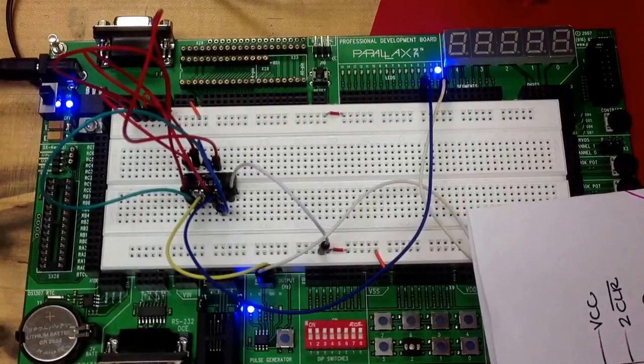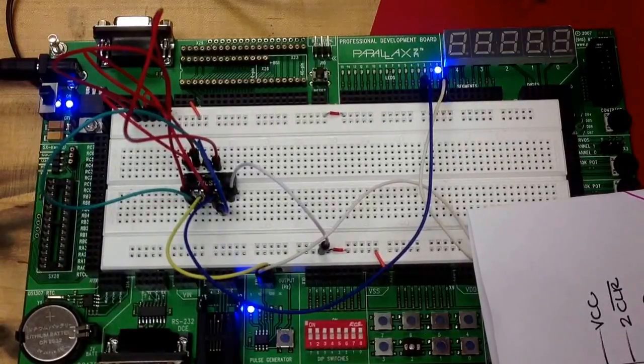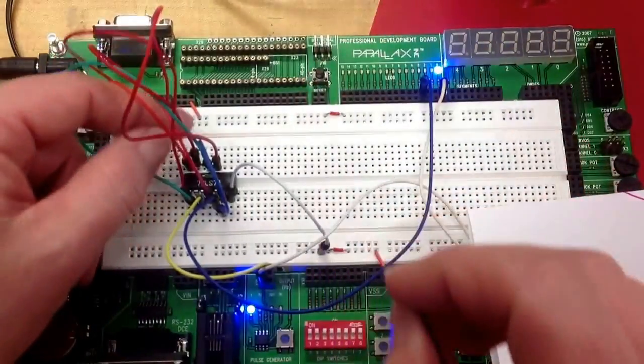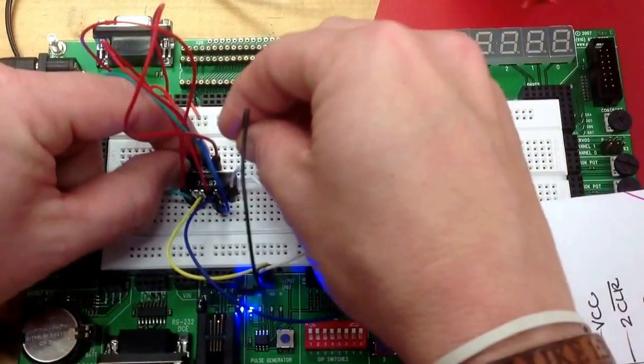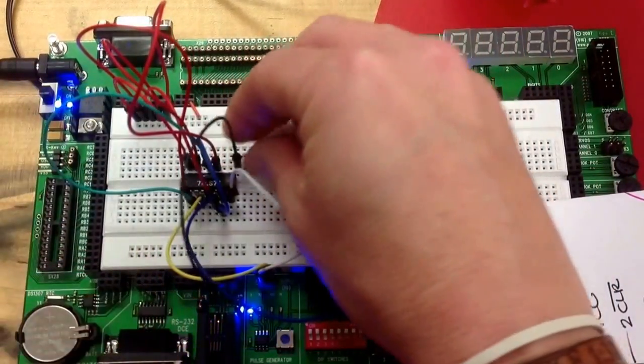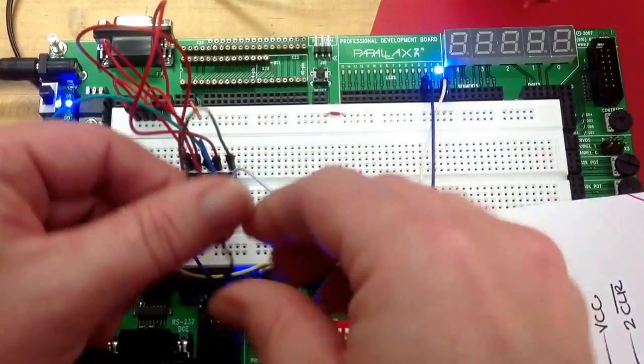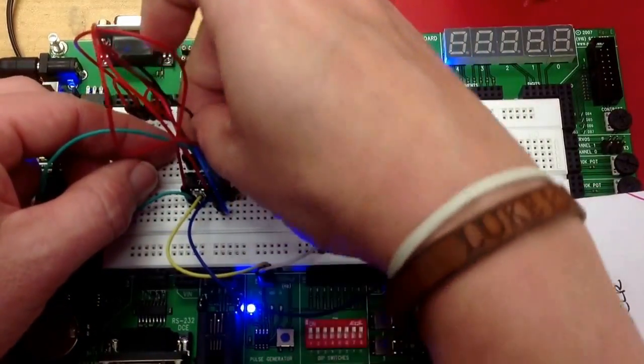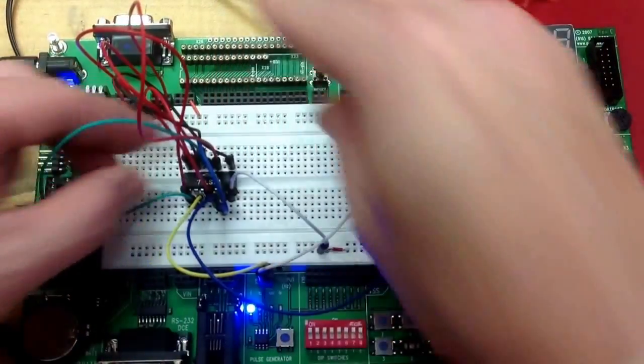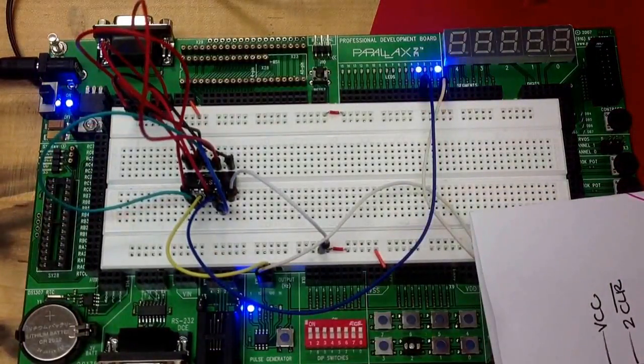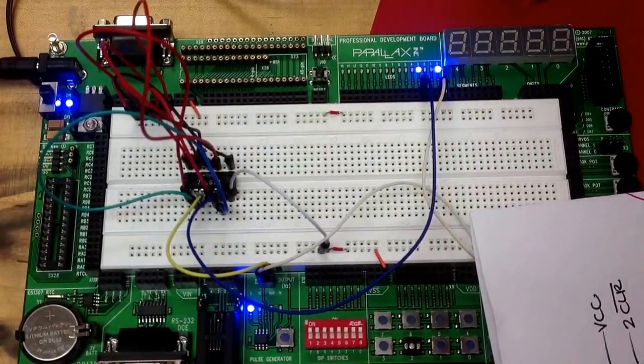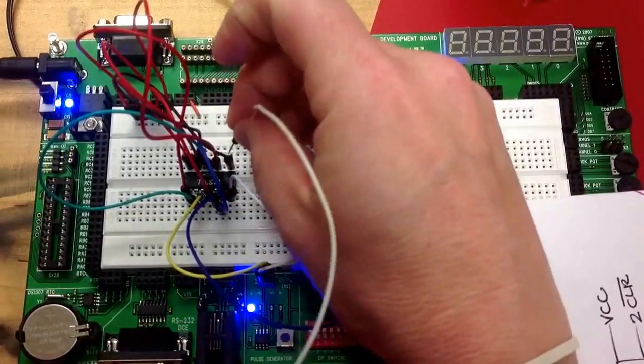My not Q needs to go into my D, and then my Q is going to go to my other output of my LED.